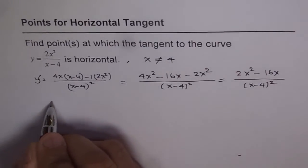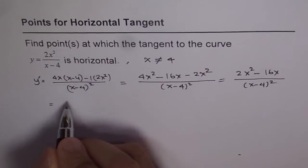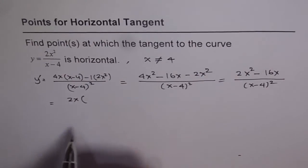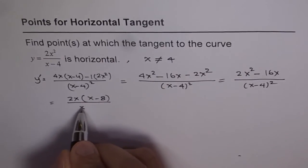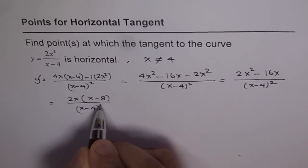Now we can simplify this and say y dash is equal to, let's take 2x common. So we have x minus 8 over x minus 4 whole square.